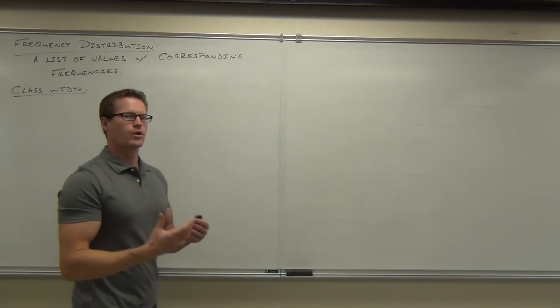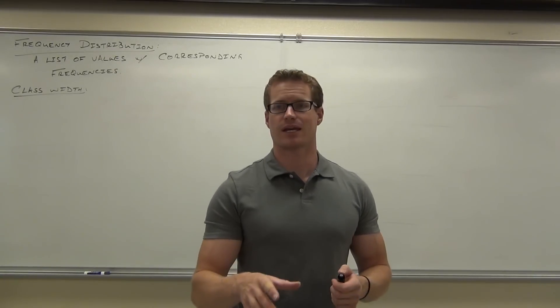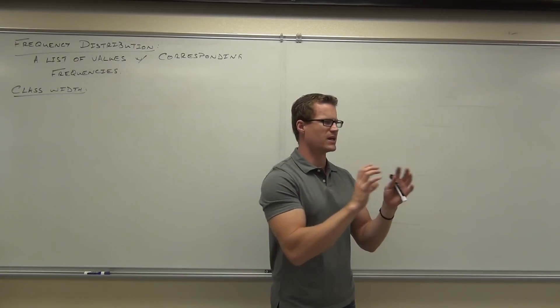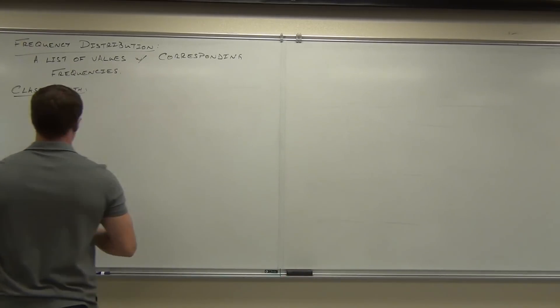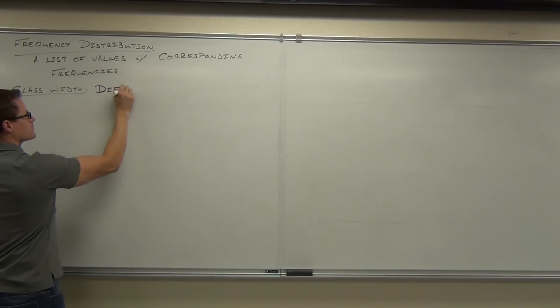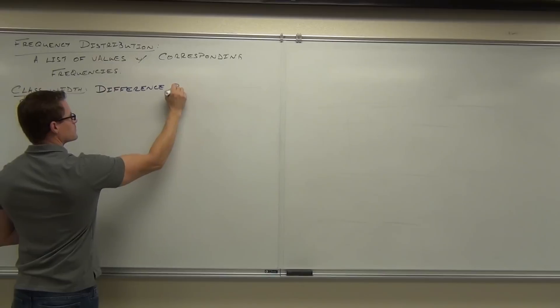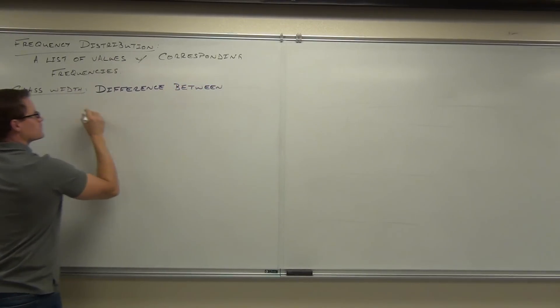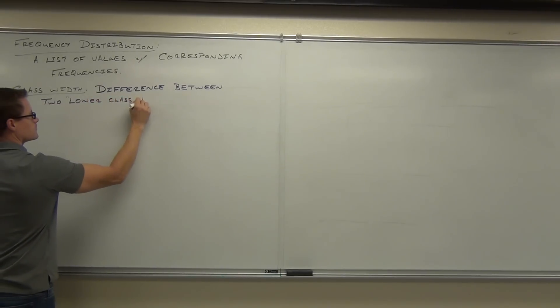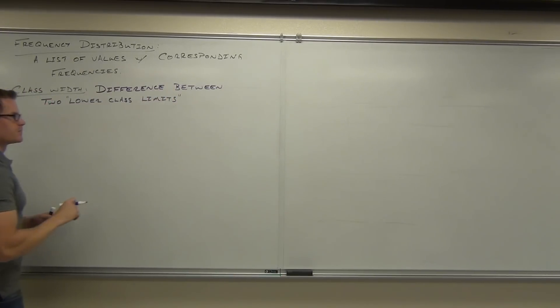So we're going to talk about a class width. What we're going to be doing is creating frequency distributions that are based on numbers. In a second, what I'm going to do in this class is I'm going to make a frequency distribution based on our ages. So first thing, the class width. This is going to be the difference between two lower class limits.